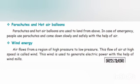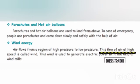Wind energy: air flows from high pressure to low pressure, and this flow of air at high speed is called wind. Wind is used to generate electric power with the help of a windmill.